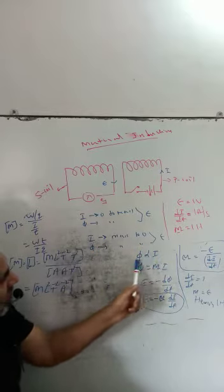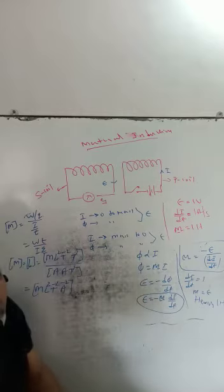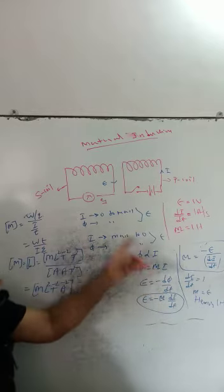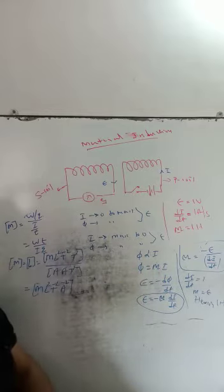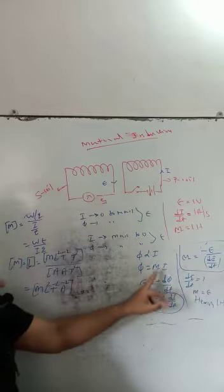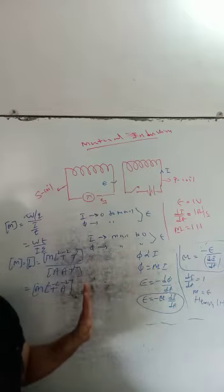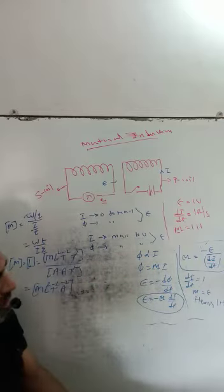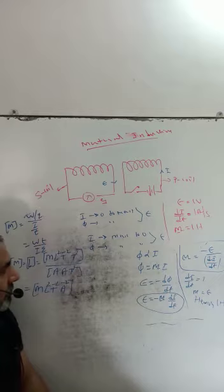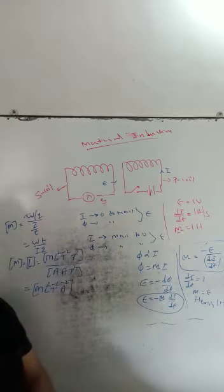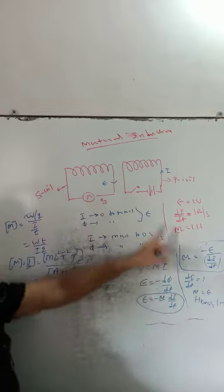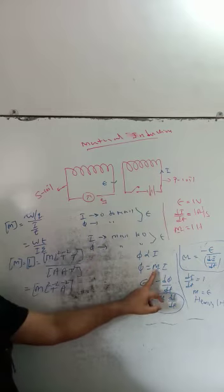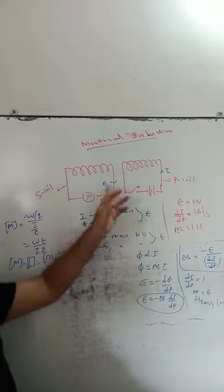That is why phi is proportional to I. The magnetic flux linked with the secondary coil at any instant is directly proportional to the current in the primary coil at the same instant. Phi is proportional to I, so phi is equal to M into I, where phi is the magnetic flux in the secondary coil, I is the current in the primary coil, and M is the mutual inductance of the pair of coils.